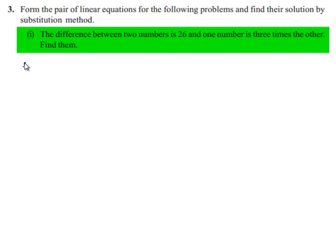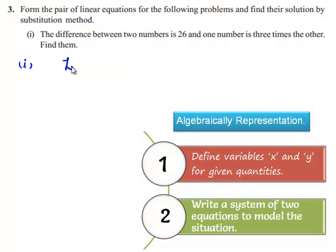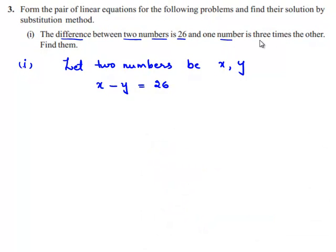So let us work out this problem. Let the two unknown numbers be x and y. According to the given problem, the difference between the two numbers is 26. That means x minus y is 26. Also one number is three times the other, so I can write x is equal to three times y. This will be equation number one and this will be equation number two.